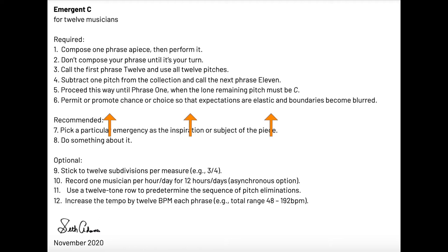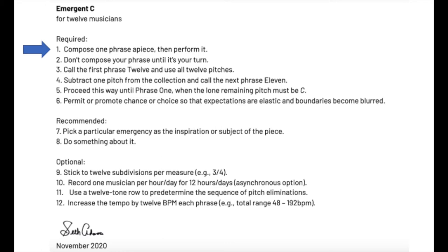The first six instructions are required. Every iteration of Emergent C should ideally meet all of these criteria, but no one's coming for you if they don't. Number one: compose one phrase apiece, then perform it. So 12 people, 12 phrases of music.